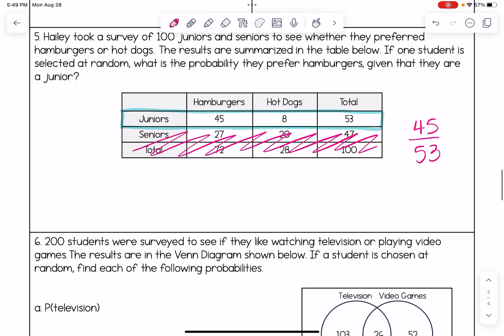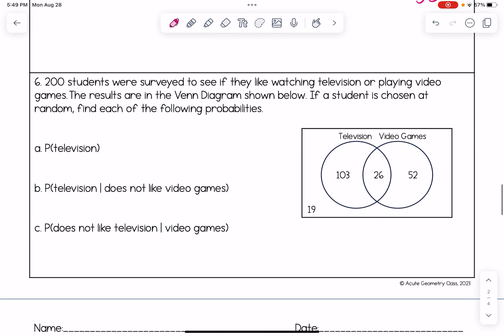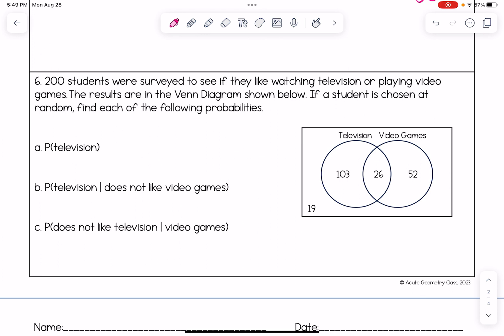One last question, but we're going to look at a Venn diagram now. 200 students were surveyed to see if they like watching television or playing video games. The results are in the Venn diagram shown below. If a student is chosen at random, find each of the probabilities. Let's just look at A, B, and C for a second here. A, notice this is just the probability of selecting television. There's no condition here, whereas in B and C, notice that vertical bar, that's our condition. So we'll just pay attention to that for those.